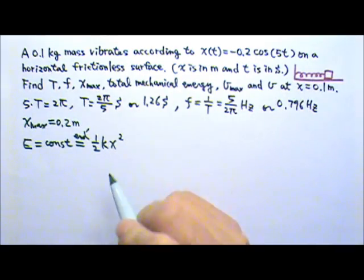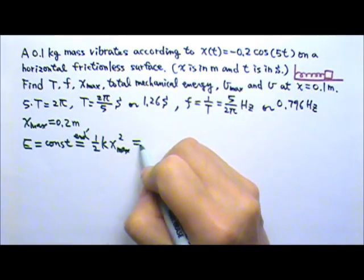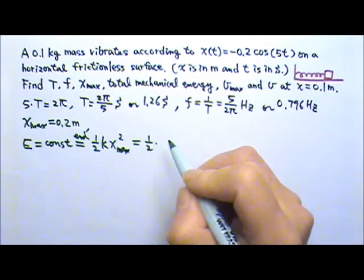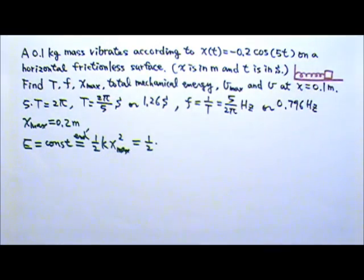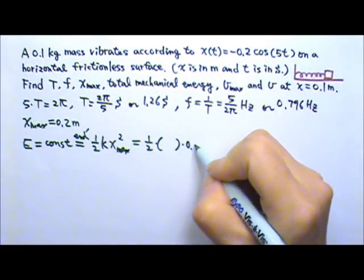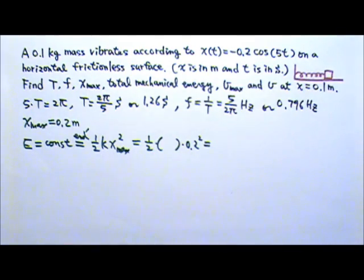1 half kx squared, and at the end point, the x is the xmax, the amplitude. So this equals to 1 half k. Now we need the k, we don't have the k, but we have to find the k first, and then we can find the total mechanical energy.